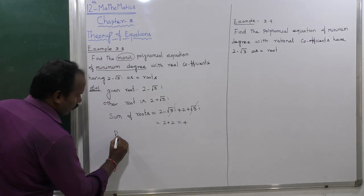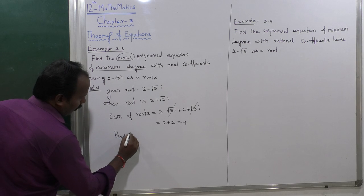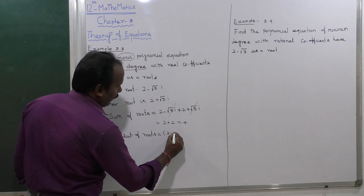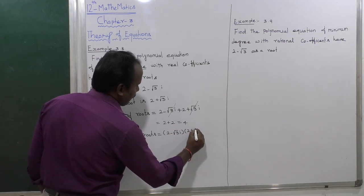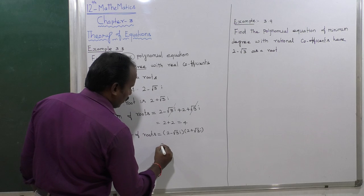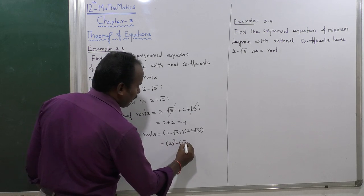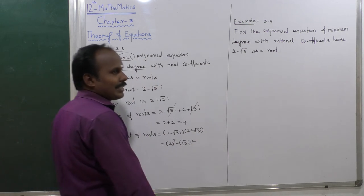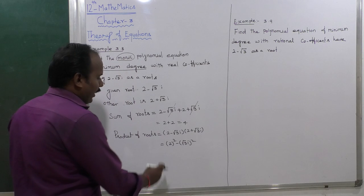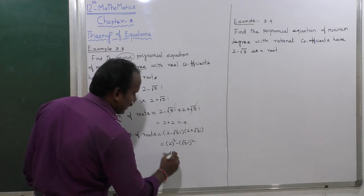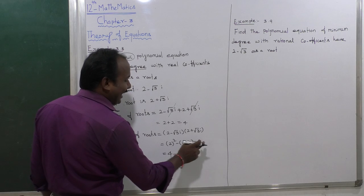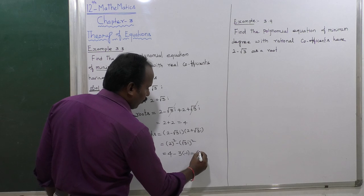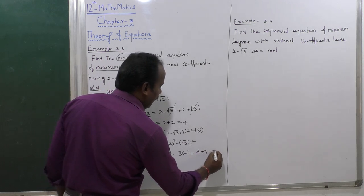Next, the product of roots: (2 minus root 3 i) multiplied by (2 plus root 3 i). This uses the formula (a minus b)(a plus b) equals a squared minus b squared. So we get 2 squared minus (root 3 i) squared, which is 4 minus 3 times i squared. Since i squared equals minus 1, this gives 4 plus 3, which equals 7.